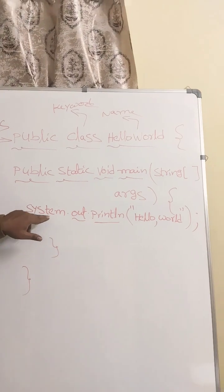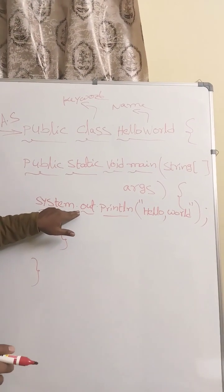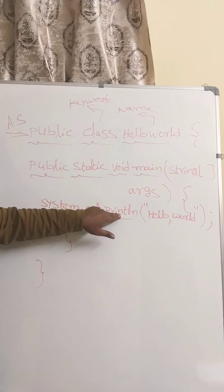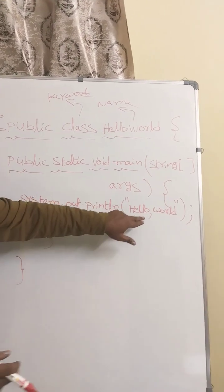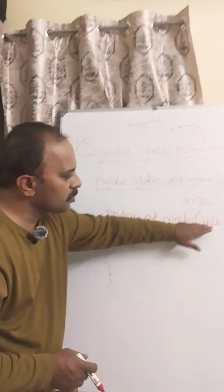And in that, the method called println - what you want to print is Hello World. println means it will print whatever you specify in this bracket and the cursor will move to the new line.